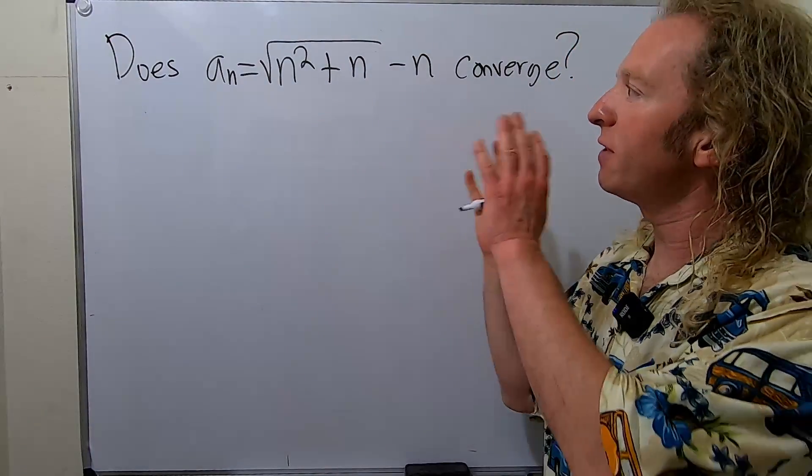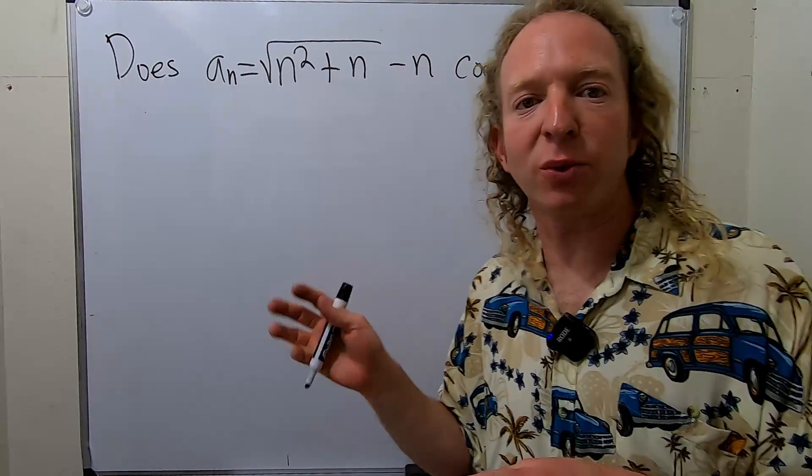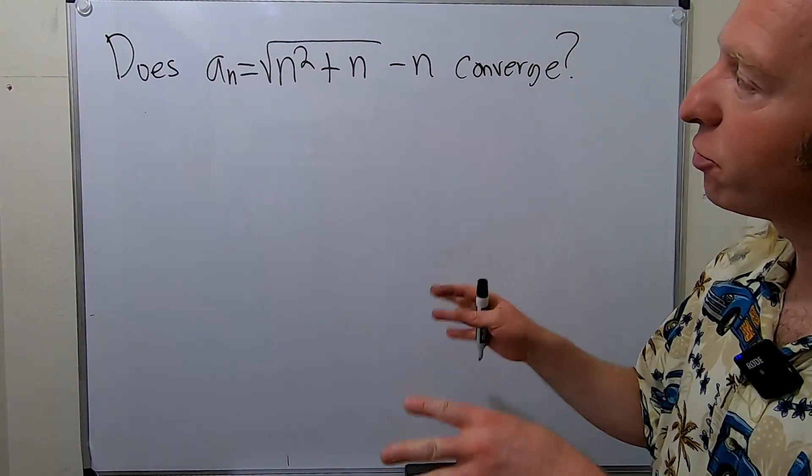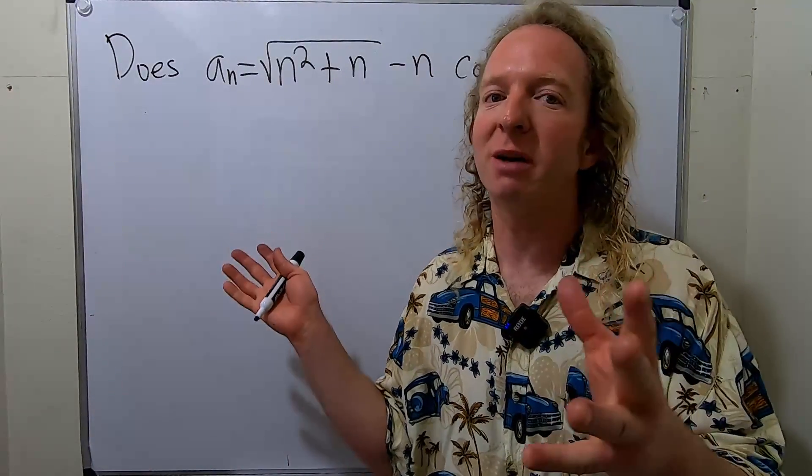Hi, everyone. In this video, we're going to investigate the convergence of the sequence a_n = √(n²+n) - n. We're going to try to figure out if it converges or diverges. We're not going to go through the proof, but we're just going to do some work and try to see what we can come up with.